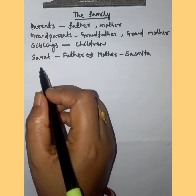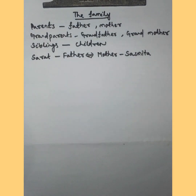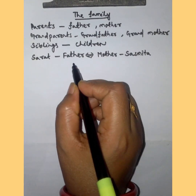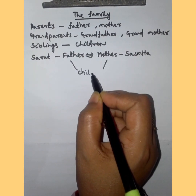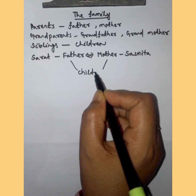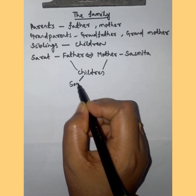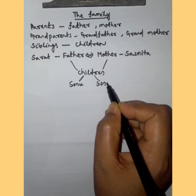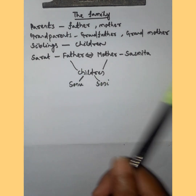The children of Sarat and Sasmita are Sonu and Soni. Sonu and Soni are the siblings of Sarat and Sasmita.